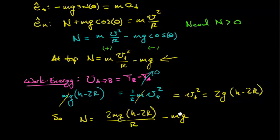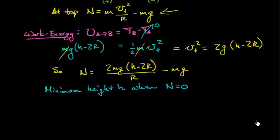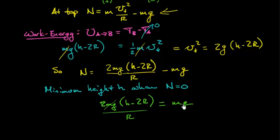What am I after? We're interested in finding the minimum height for which the block remains in contact. In other words, we want to find the minimum h so that n, my normal force, still remains positive. The critical case is the h for which this normal force is exactly zero. So this tells us that two mg h minus two r over r equals mg. Notice that the mg's both go away. So that leaves me with two h minus two r equals r. If I work on solving for h, I get two h equals four r plus another r, so I'm getting five r, or h equals five halves of an r. And there's my answer.